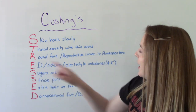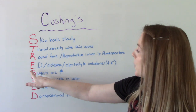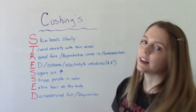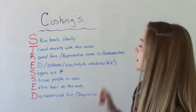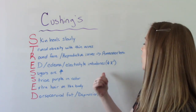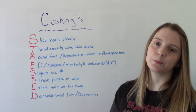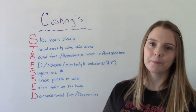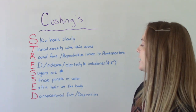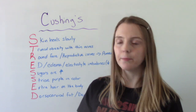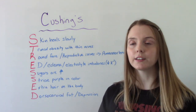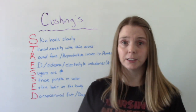For men, when it comes to reproductive issues, erectile dysfunction. E is for edema. And electrolyte imbalance, specifically low potassium levels — so hypokalemia. Their sugars are elevated, so hyperglycemia. They have striae, which are stretch marks, and they appear purplish in color.